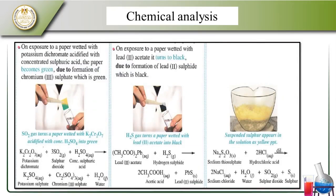The paper wetted with potassium dichromate solution will turn green, because chromium sulfite (green) is formed. Potassium dichromate with concentrated sulfuric acid gives potassium sulfate, chromium sulfate, and water. When we add lead sulfide (which is black) to the reaction...